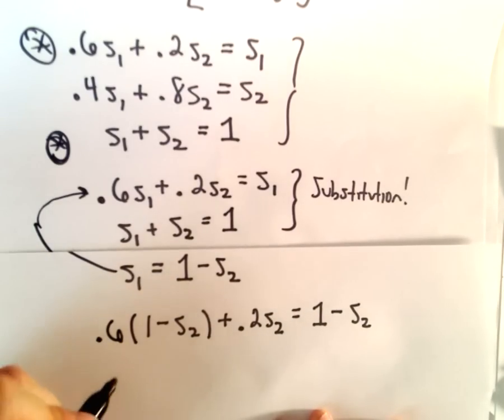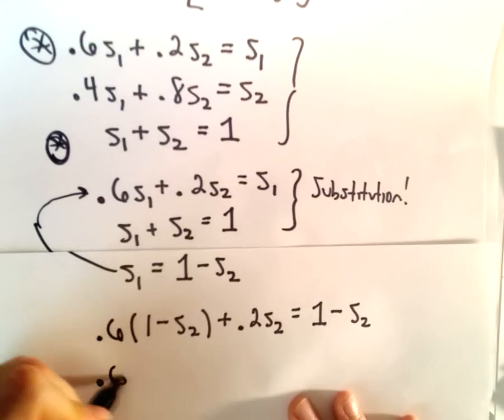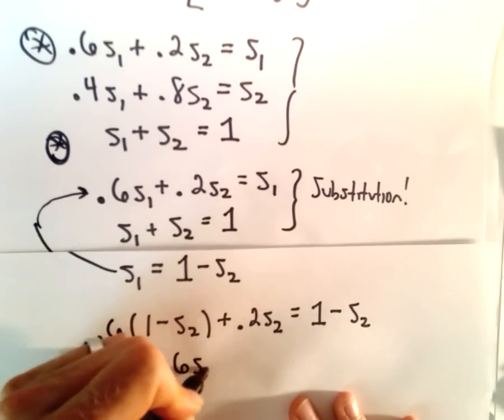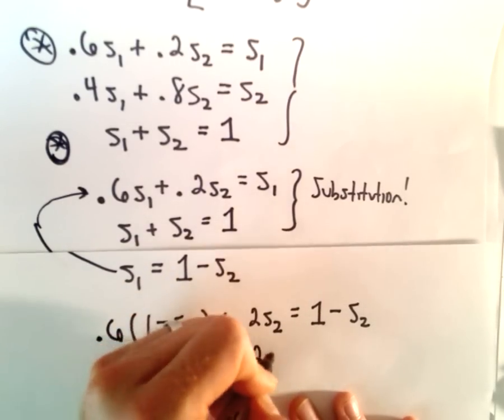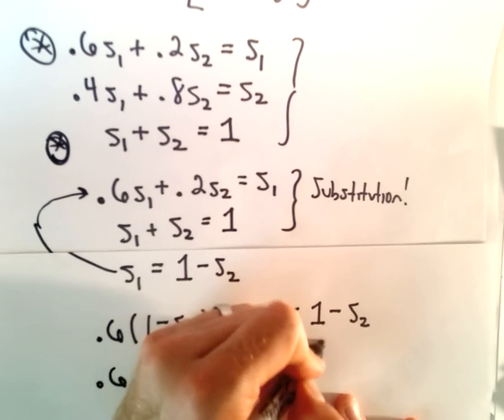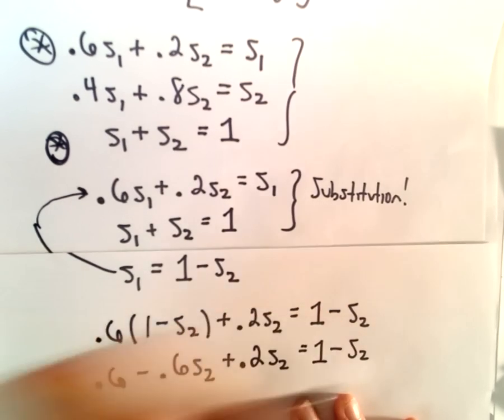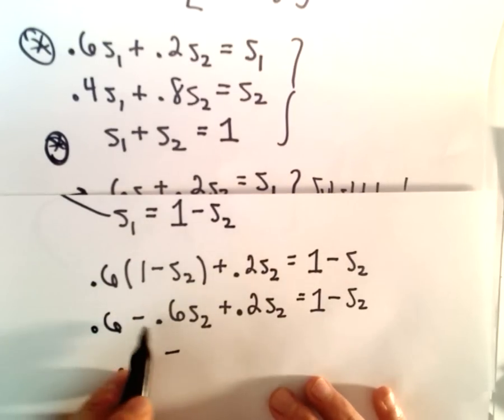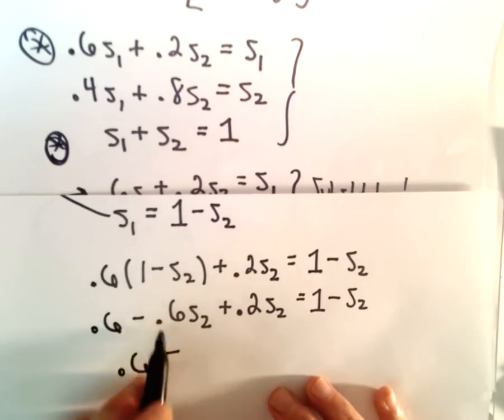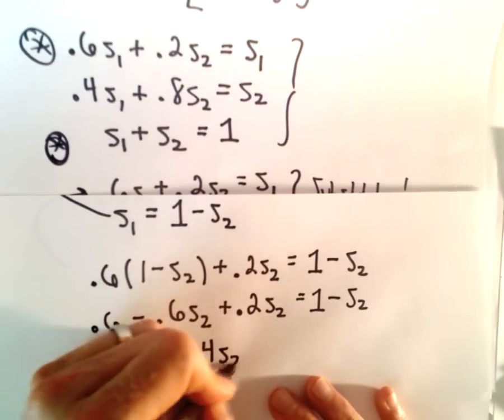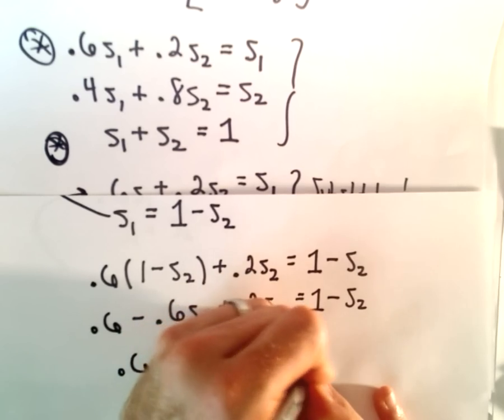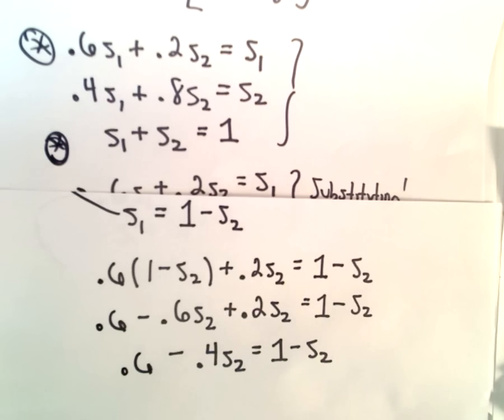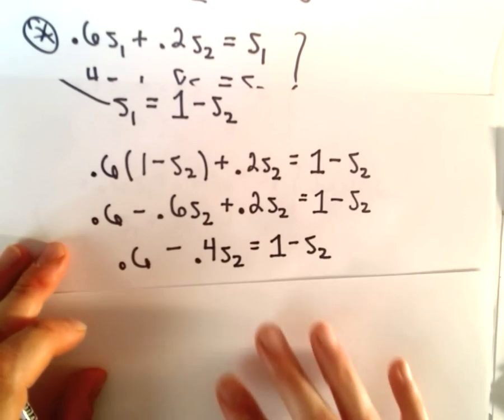If we distribute, we've got 0.6 minus 0.6S₂ plus 0.2S₂, and that's going to equal 1 minus S₂. On the left side, we've got 0.6 minus, if we take negative 0.6S₂ plus 0.2S₂, that'll leave us with negative 0.4S₂. Now I'm going to collect all my variables on one side and the numbers on the other.